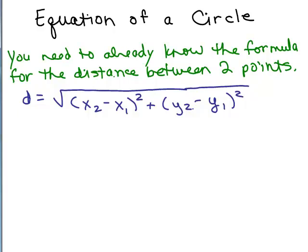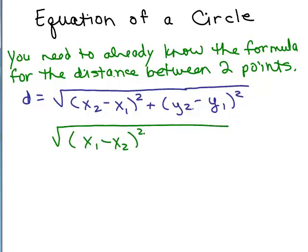Before we derive the equation of the circle, we already need to know the formula for the distance between any two points. Remember, it doesn't matter if you have X1 minus X2 squared or the other way around, because once you square the number you'll get the same thing. You need to be comfortable with square roots, and the distance formula came from the Pythagorean theorem, so you might want to review the Pythagorean theorem and the distance formula first.